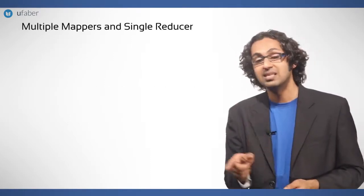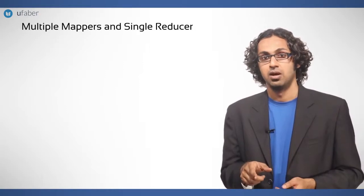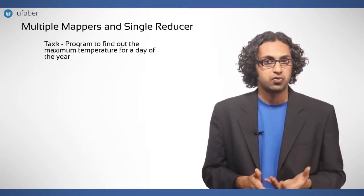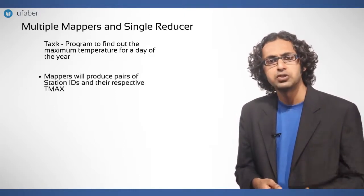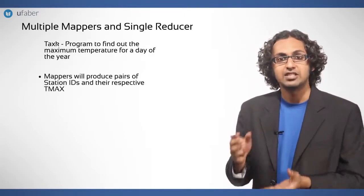Now multiple mappers and single reducer is another case. For this, we have already seen the program to find out the maximum temperature for a day of the year. In this task, mappers will produce pairs of station IDs and their respective T max.